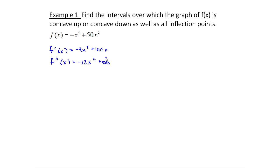Just as before with the first derivative, I want to know when the second derivative is undefined or when it equals zero, because that's where changes might happen. Well, this is a polynomial, so it's defined everywhere. So for this one, all I want to know is where is f double prime equal to zero.